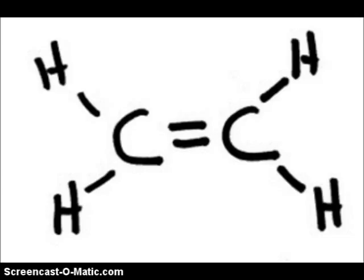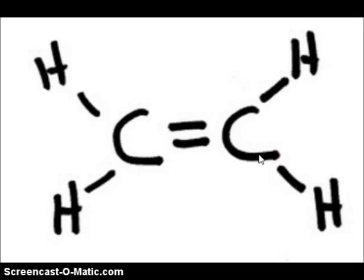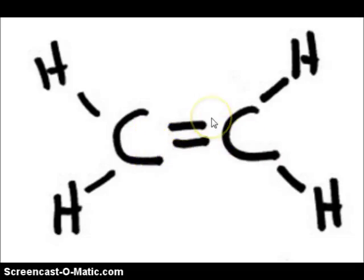Here's an example of a hydrocarbon that has a double bond. We would call this one ethene. It's eth because there are two carbon atoms found in the molecule, and the ene ending tells us that there is a double bond present in the molecule.